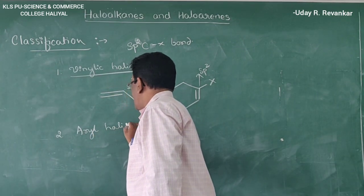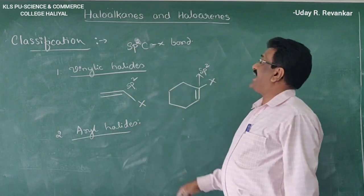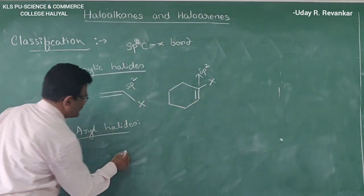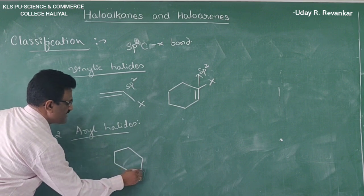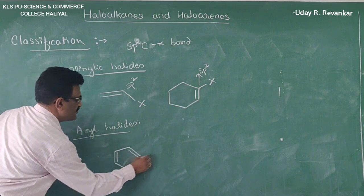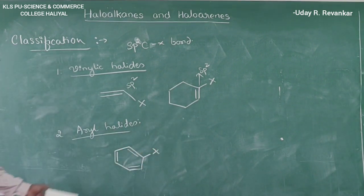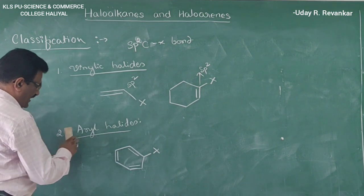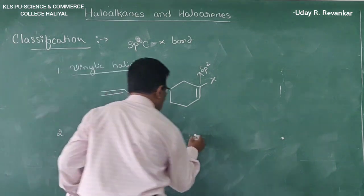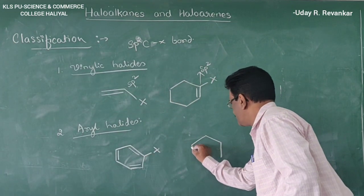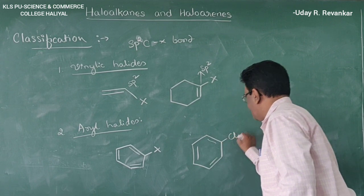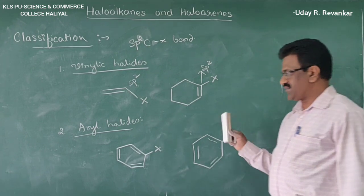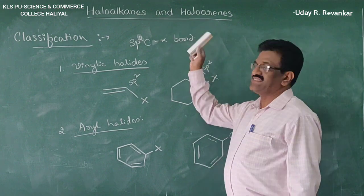Aryl halides are those in which the halogen atom is attached to an sp² hybridized carbon of an aromatic ring or benzene ring. For example, chlorobenzene is an example of an aryl halide. This concludes the classification of haloalkanes and haloarenes.